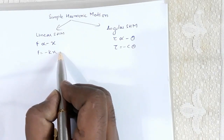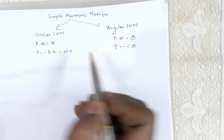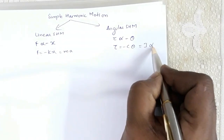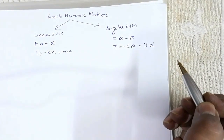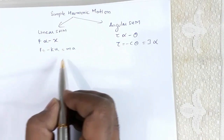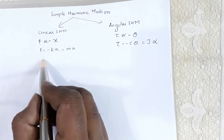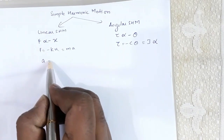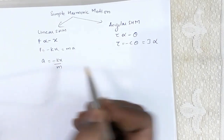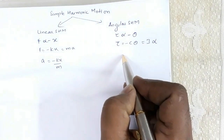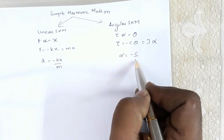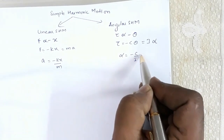Now, if F = -kx, F is also equal to ma. Similarly, τ is also equal to I·α. So from this I can write a = -kx/m.